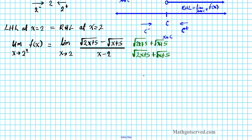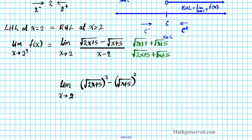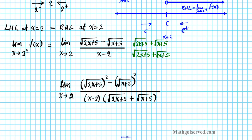We're creating a difference of squares in the numerator. Recall that (a − b)(a + b) = a² − b². So the numerator becomes the square of (√(2x + 5)) minus the square of (√(x + 7)). In the denominator, when rationalizing radical expressions of this nature, do not bother simplifying — just leave it as (x − 2) times (√(2x + 5) + √(x + 7)) and hope for cancellation.